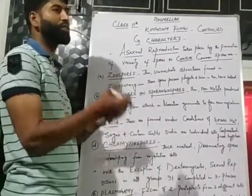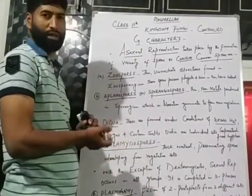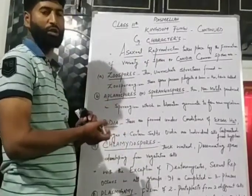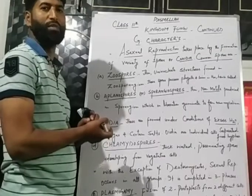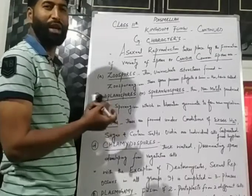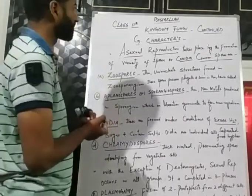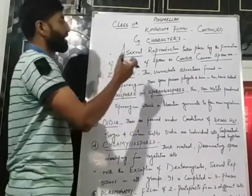We have studied vegetative reproduction. Vegetative reproduction takes place by fragmentation, budding, and fission.